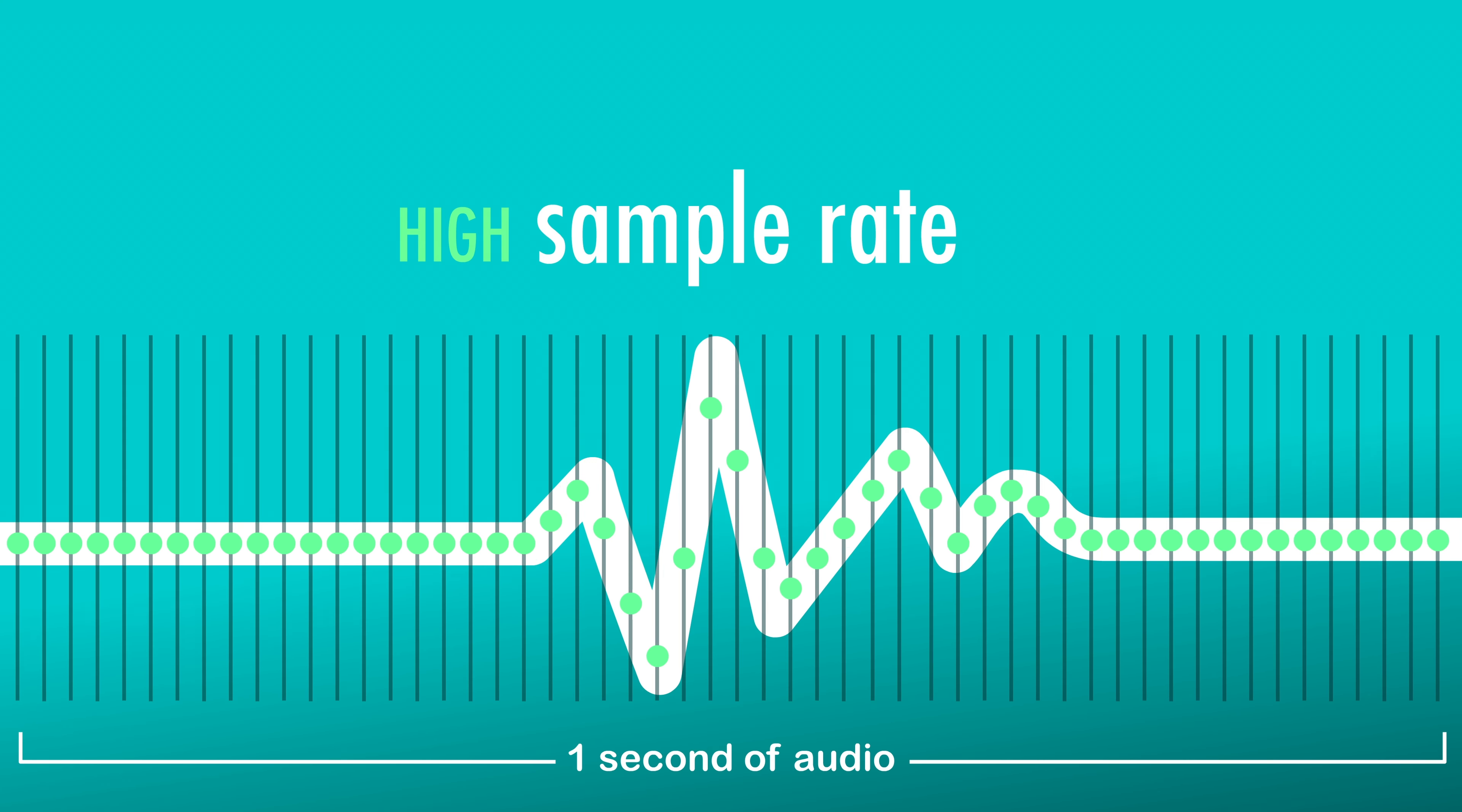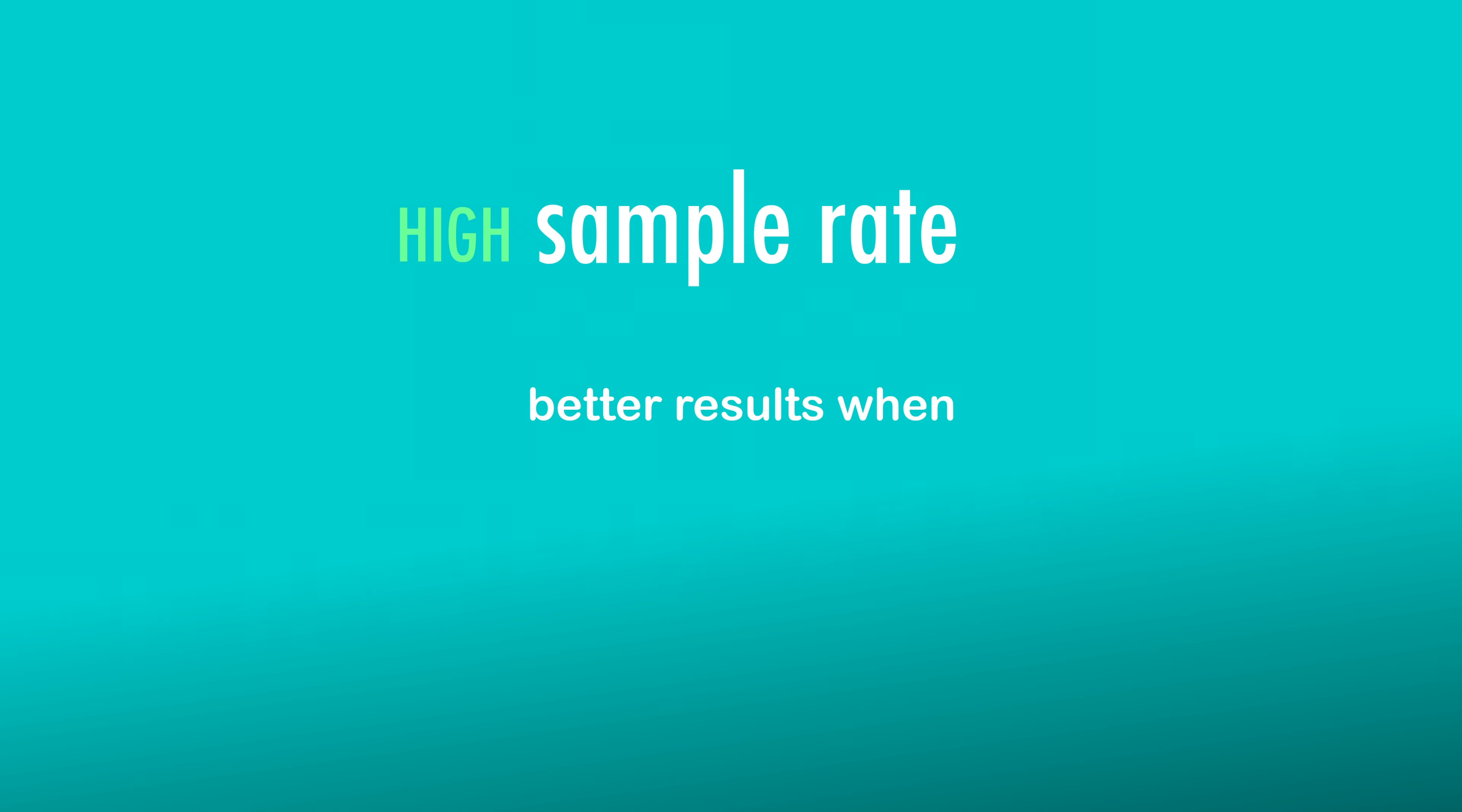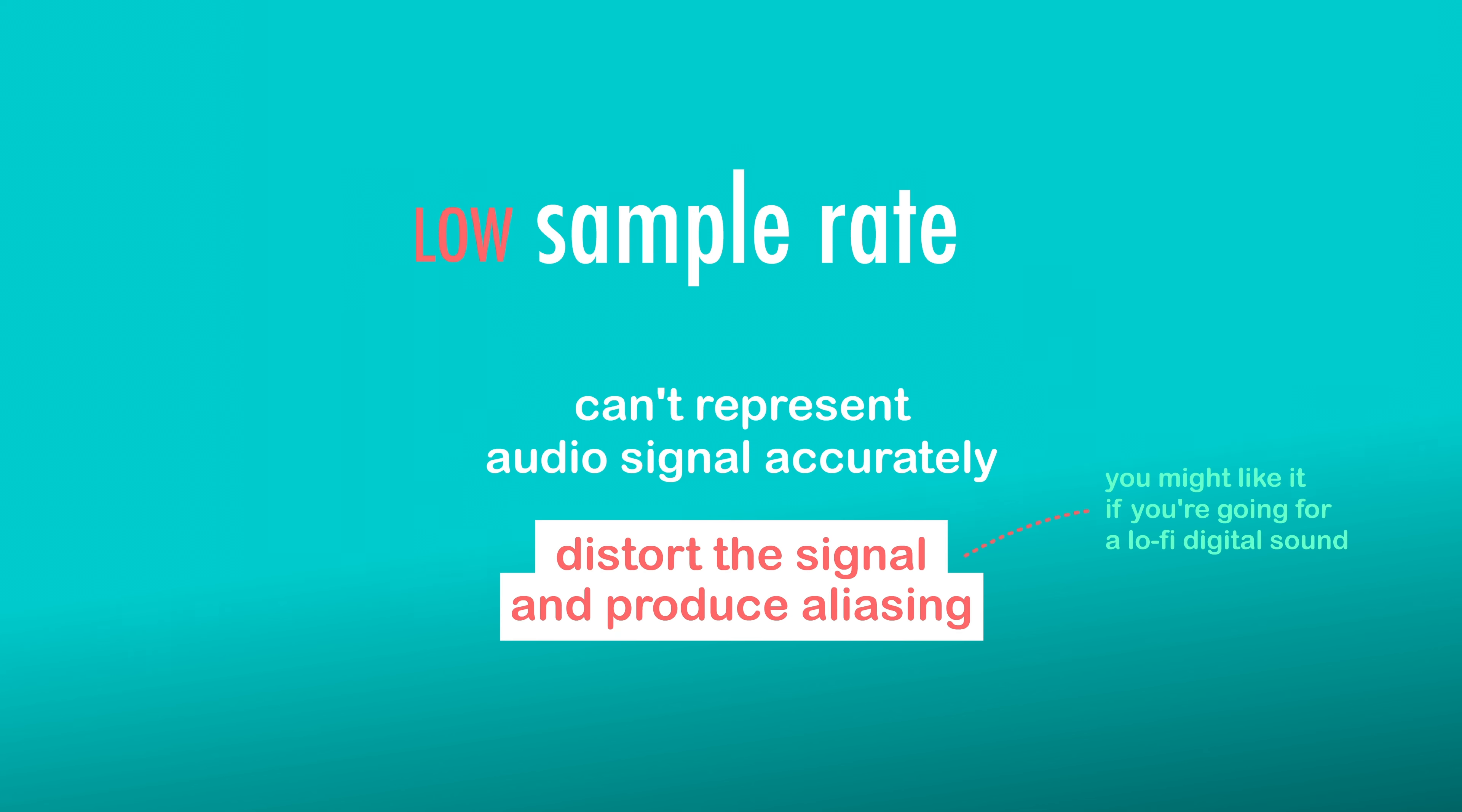Higher values will provide even more accuracy and allow for better results when applying effects such as pitch shifting and time warping later on in your DAW, but will also create much larger audio files and use much more CPU power. Lower values can't accurately represent an audio signal in the range of human hearing and will decrease the fidelity of the digital audio.